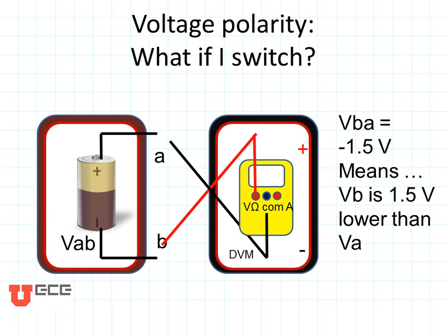Voltage has polarity. What if I switch my leads? What if I measure with the red lead at point B and the negative lead at point A? Then VBA will be read on the voltmeter as minus 1.5 volts. That means that VB is 1.5 volts lower than VA. You could stop for a minute and use Multisim to experiment with your voltage and voltmeter to see this happen.